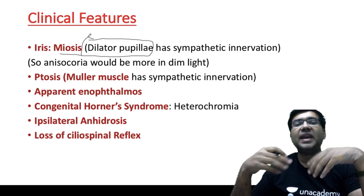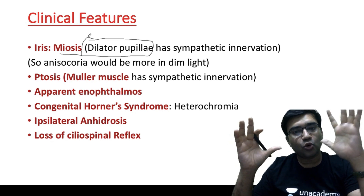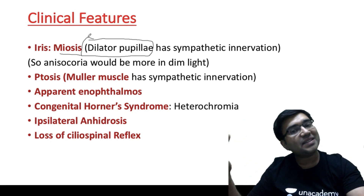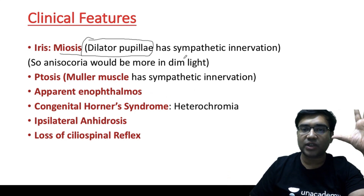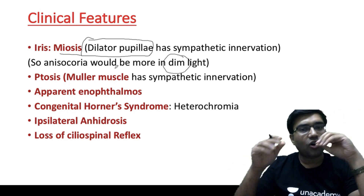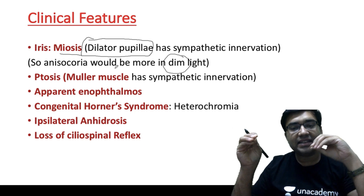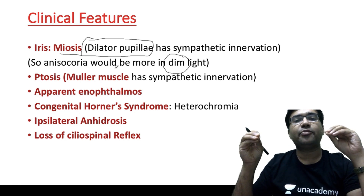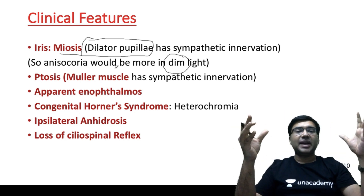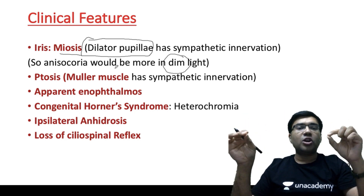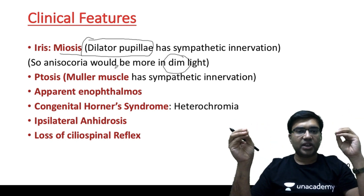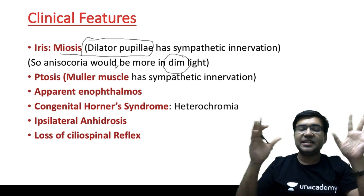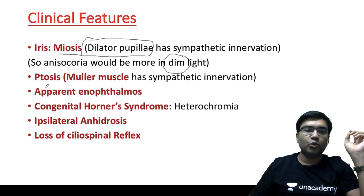This small pupil would be aggravated more in dim light. In dim light, the pupil normally dilates. So in cases of Horner syndrome, this dilation of the pupil, which is affected by the syndrome, would not occur in the dark. So there would be a difference in the size of the pupils — what we call anisocoria.